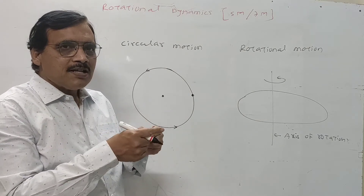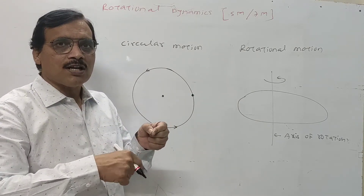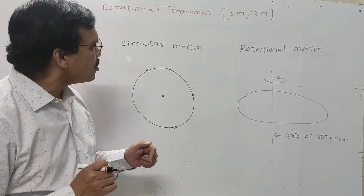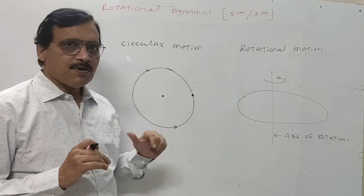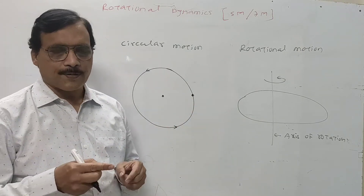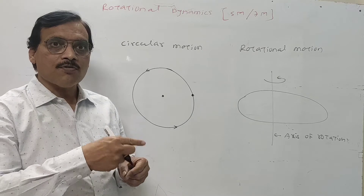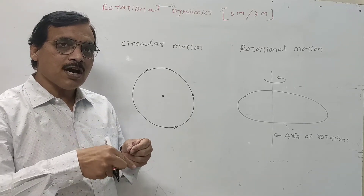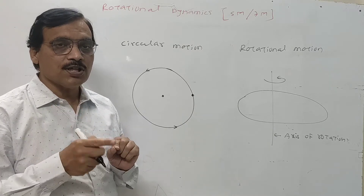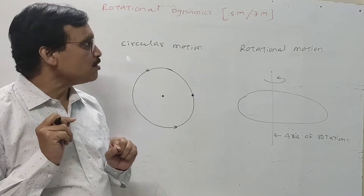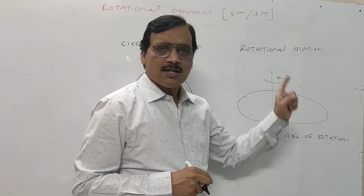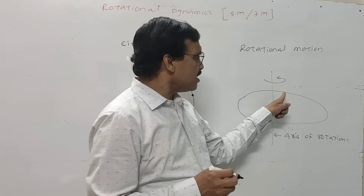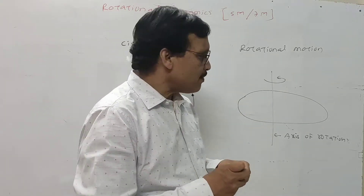This circular motion is a planetary motion — for example, Earth revolving around the Sun is circular motion, and electrons revolving around the nucleus is also an example of circular motion.